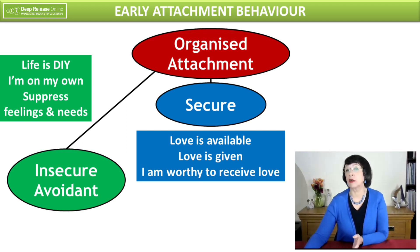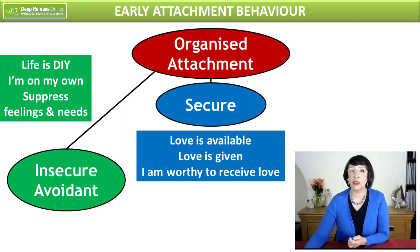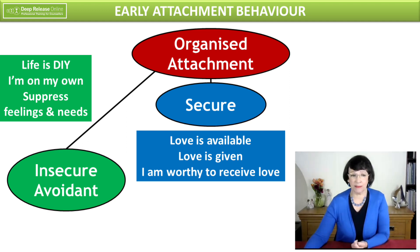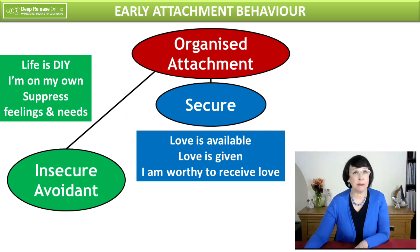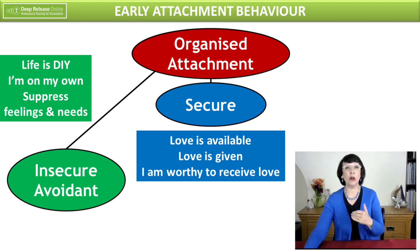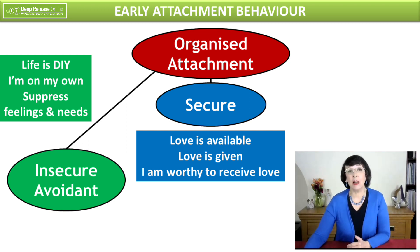Then we have insecure avoidant attachment, where maybe your chief carer is very, very practical, very functional — kind of mom or dad or whatever. And you learn that actually it's no use sharing your needs or getting upset or crying because there's no cuddles. You emotionally decide then that you're on your own. Life is DIY. You suppress your feelings and needs because there's no one there for you. And that can already be in existence — a low expectation of emotional support — by the age of one.